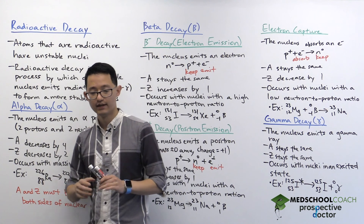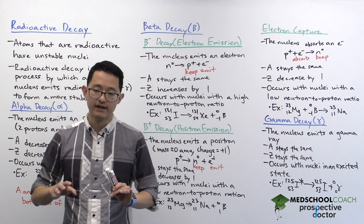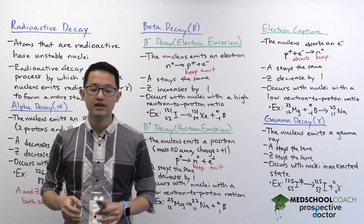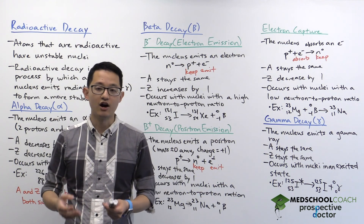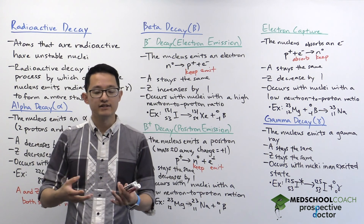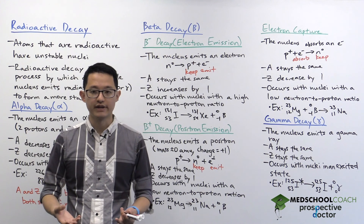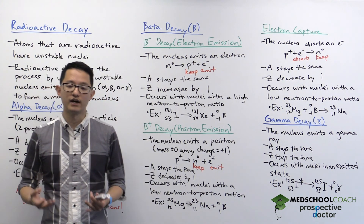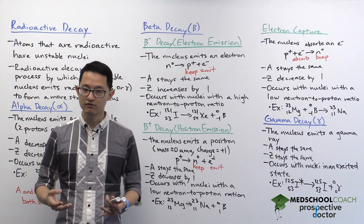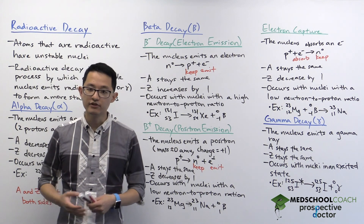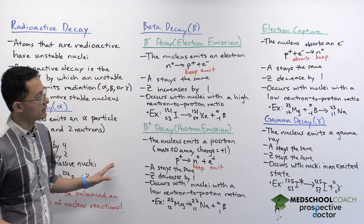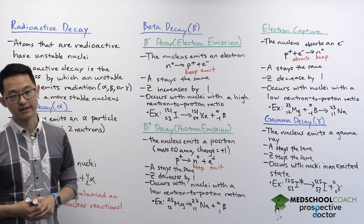Those are the different types of radiation on the MCAT. A common MCAT question with radiation is they'll present you with a nuclear reaction and ask what kind of decay it is. Answering these questions isn't too tough, but you do have to be able to recognize the difference between the different types of nuclear decay.